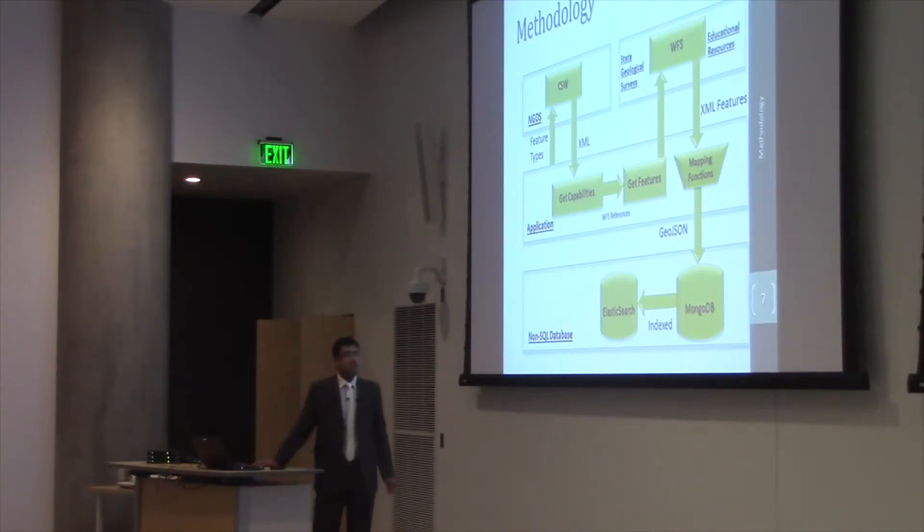Here is the methodology I have adopted to complete the project. Application requests catalog services for web hosted at USGIN repository. In response, the repository returns the XML features that are in get capabilities format URLs. Then my application modifies those get capabilities URLs to get feature requests that request the web feature services hosted by the 50 geological services and at other educational resources sites.